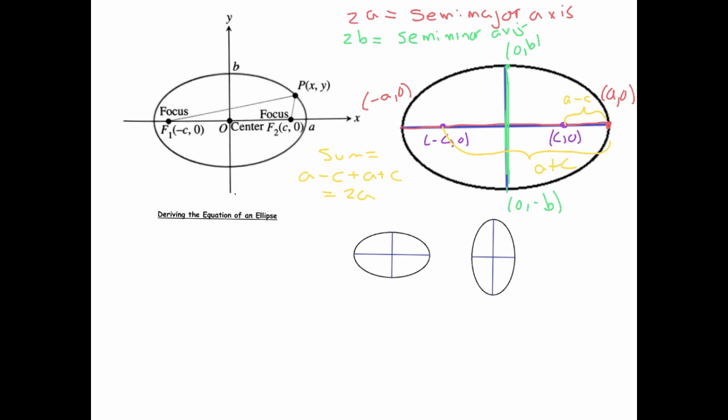If you couple that with the fact that the co-vertex (0, b) is also on the ellipse, I've just drawn an isosceles triangle. This distance must be a, this must be a, this vertical distance must be b, and this length is c. That's a right triangle, so I've got a Pythagorean relation: a squared equals b squared plus c squared.